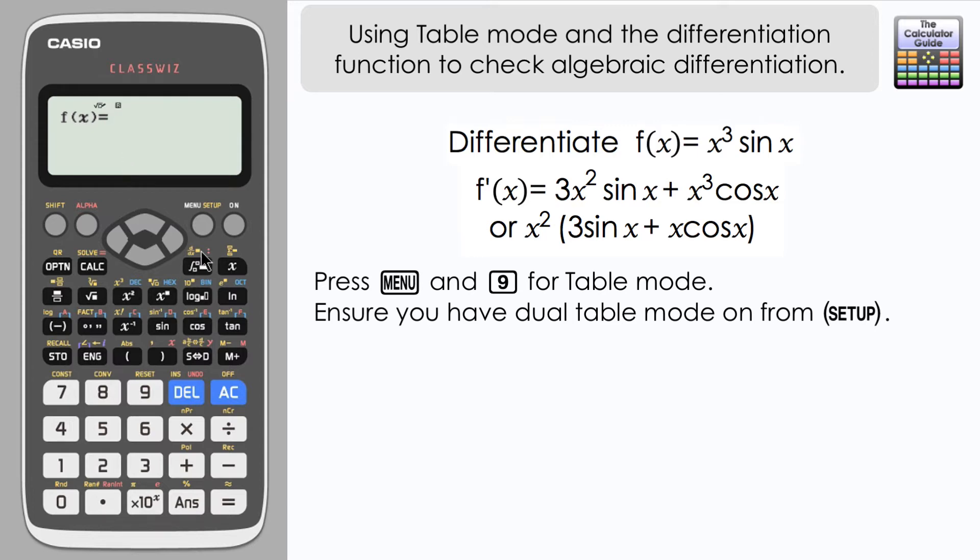So firstly, what I'm going to do is use the differentiation function on the calculator. So I'm going to press shift and d/dx. And we've got a space here to be able to input a function. So what I'm going to do is input the original function that we were first given. So that's x³ sin x. And don't forget, we need to just close off this bracket here. This large bracket is what's going to be differentiated. So I just want to close that bracket off for my sin x there.